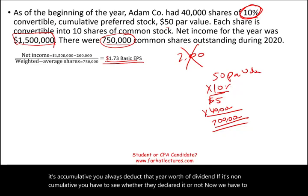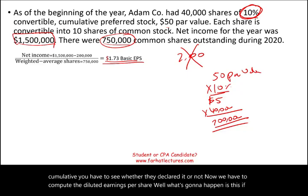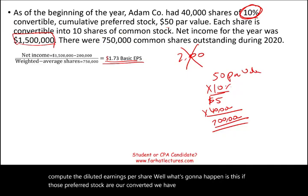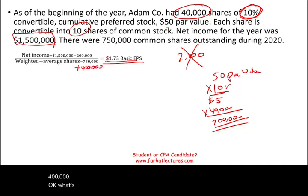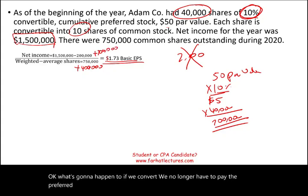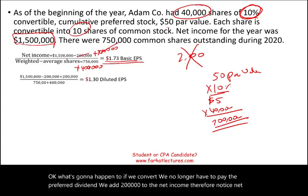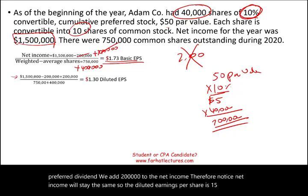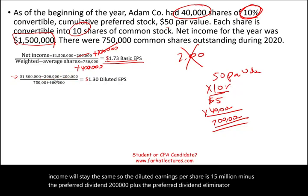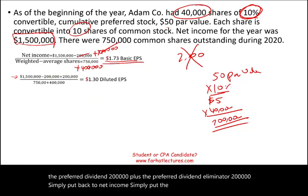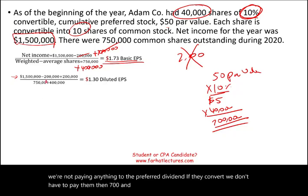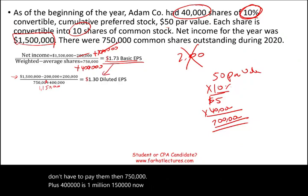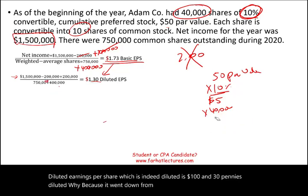Now we compute diluted EPS. If the preferred shares are converted, we have 40,000 shares times 10 shares each, adding 400,000 to the denominator. If they convert, we no longer pay the preferred dividend, so we add $200,000 back to the numerator. The numerator becomes net income of $1.5 million — the $200,000 preferred dividend subtracted and then added back equals $1.5 million. The denominator is 750,000 plus 400,000 equals 1,150,000. Diluted EPS is $1.30, which is indeed diluted — it went down from $1.73 to $1.30.